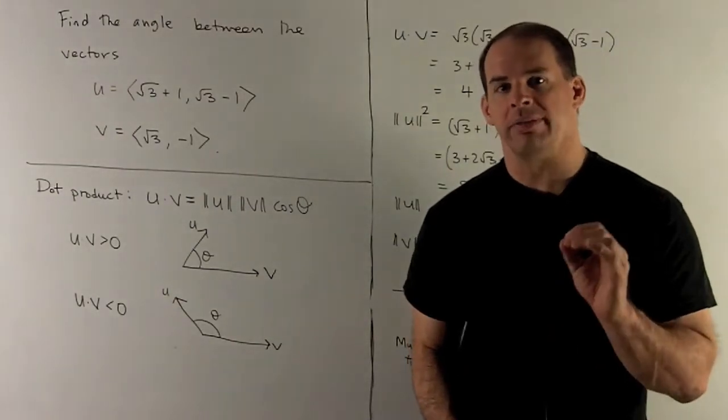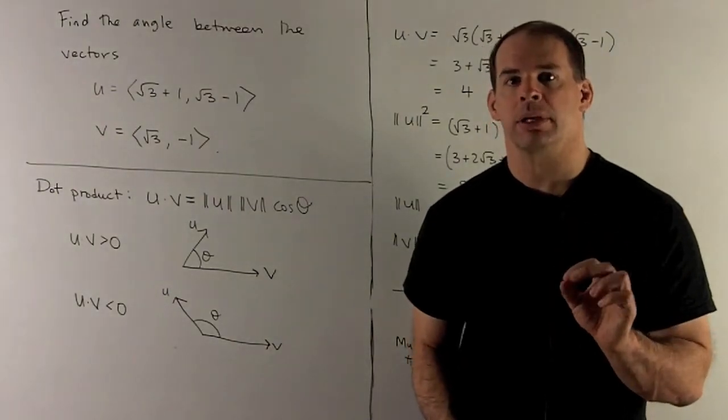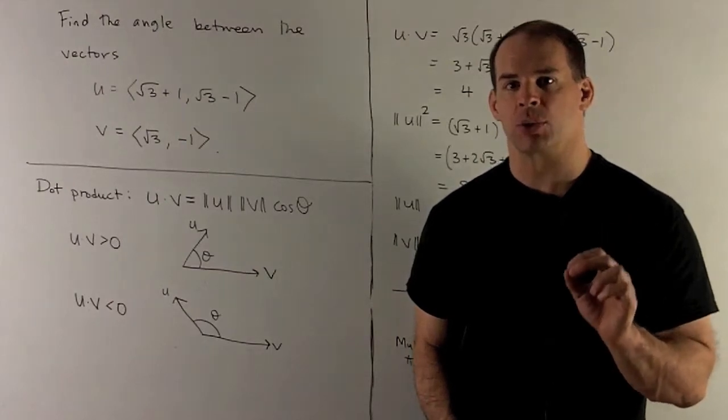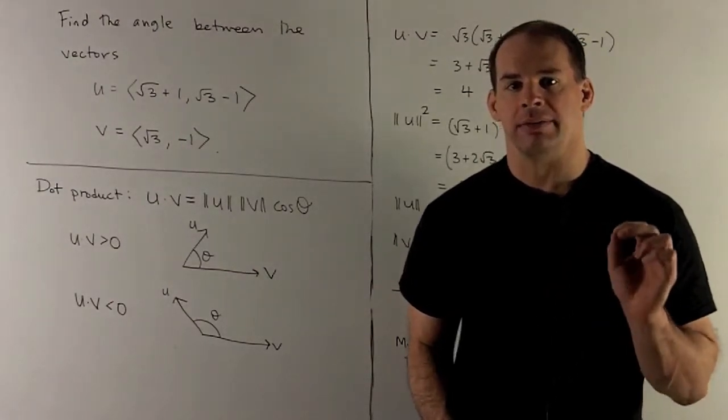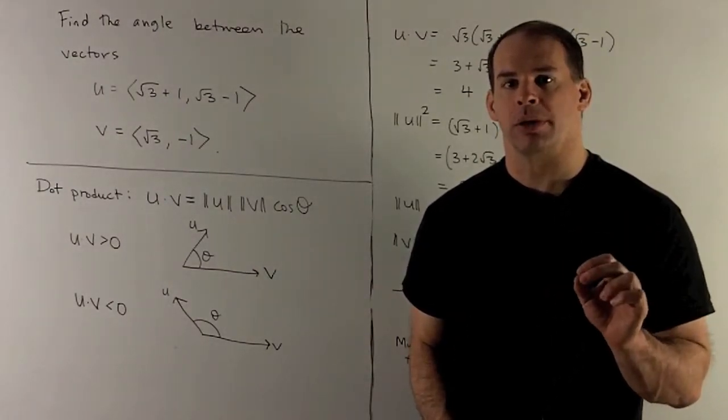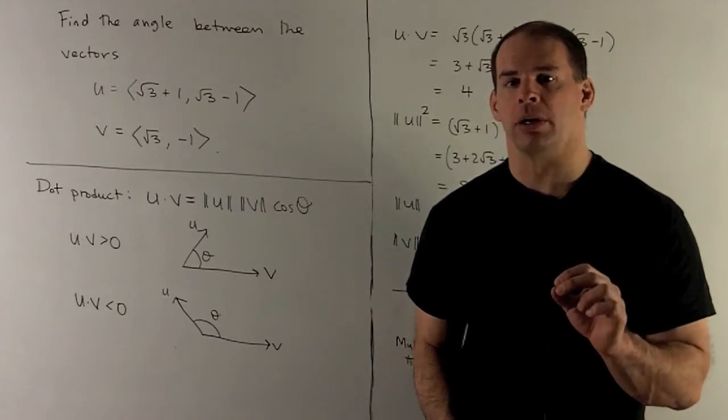Find the angle between the vectors u equals (√3 + 1, √3 - 1) and v equals (√3, -1).